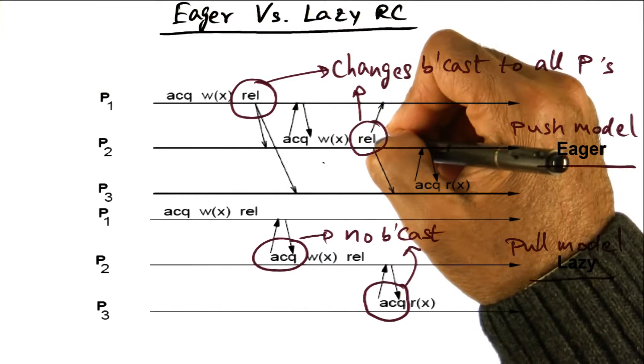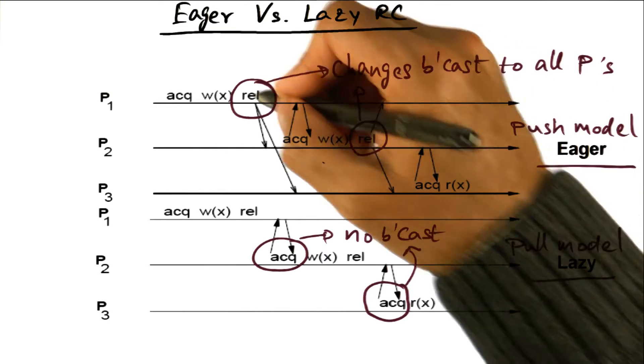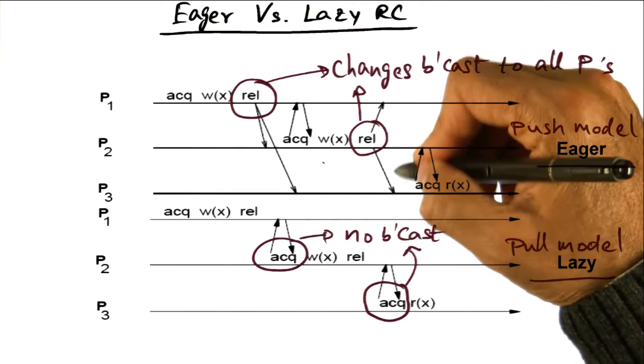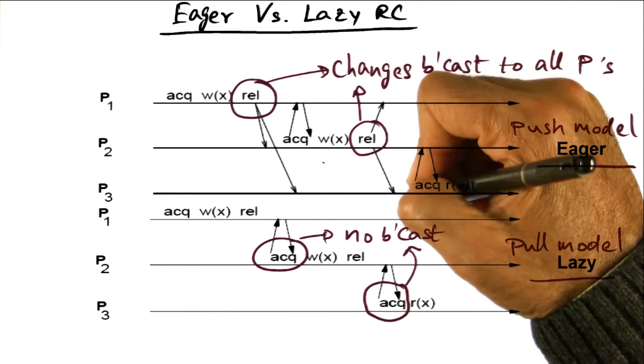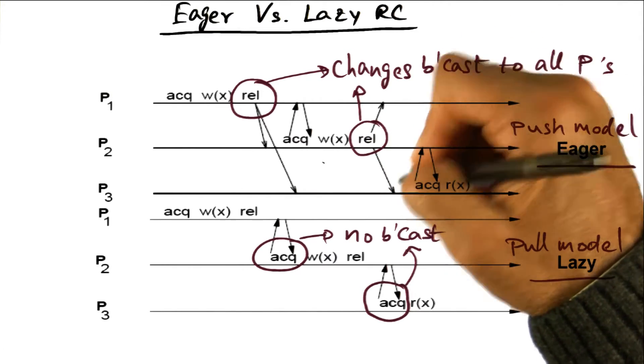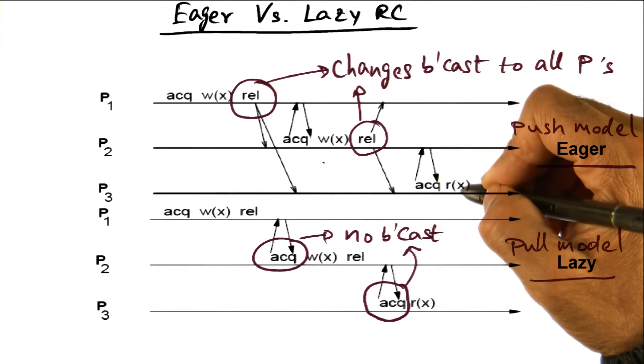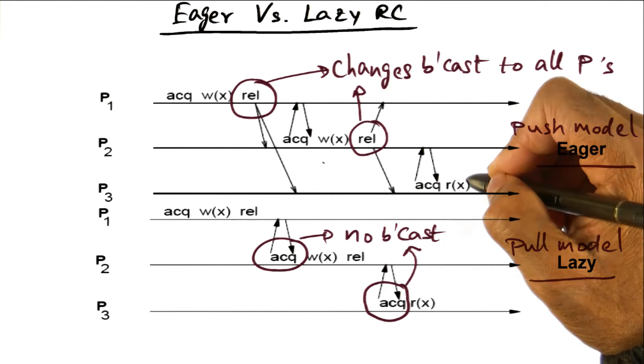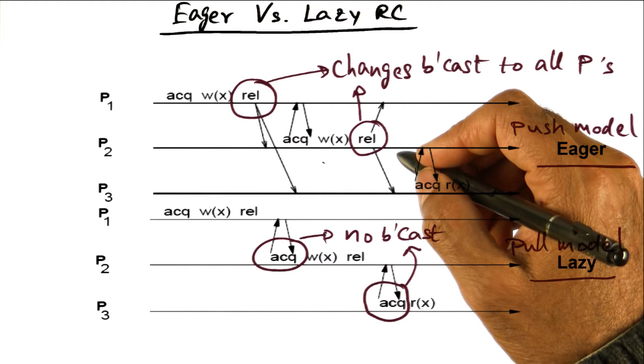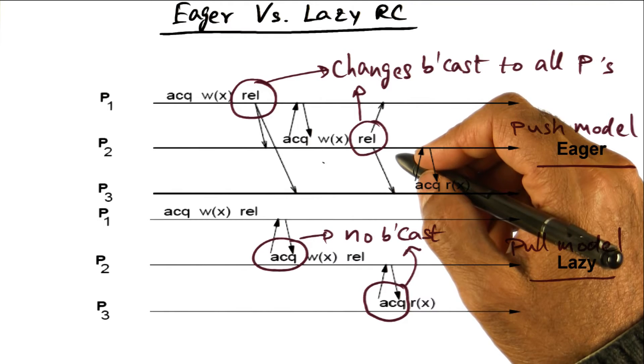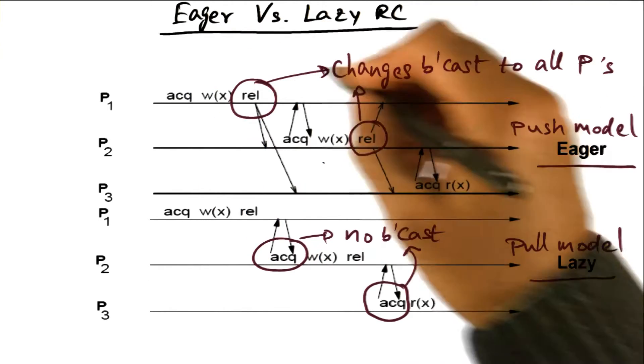But when it releases its critical section, it's once again going to do exactly the same thing that happened over here, and that is, it's going to broadcast the changes it made to shared memory locations to all the other processes. In this case, P1 and P2. And then finally, P3 does its acquire and then reads the variable. So all these arrows are showing you the coherence actions that are inherent in the completion of shared memory accesses that are happening in the critical section of programs.